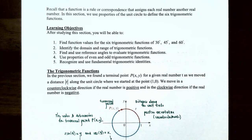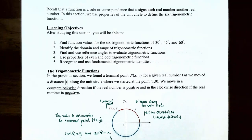In this video we're going to talk about how to define the function values for the six trigonometric functions for 30 degrees, 45 degrees, and 60 degrees, or their equivalent angles in radians: pi divided by 6, pi divided by 4, and pi divided by 3. We're also going to identify the domain and range of trigonometric functions.